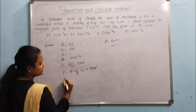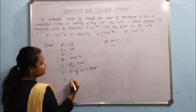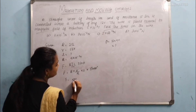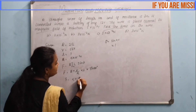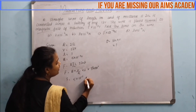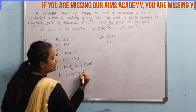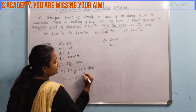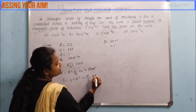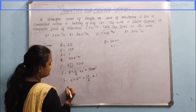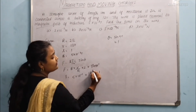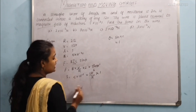Now we are substituting the values. B value is 5 into 10 power minus 3, V value is 12, R value is 2, and L value is 1. Cancelling 2 and 12, we get 6.